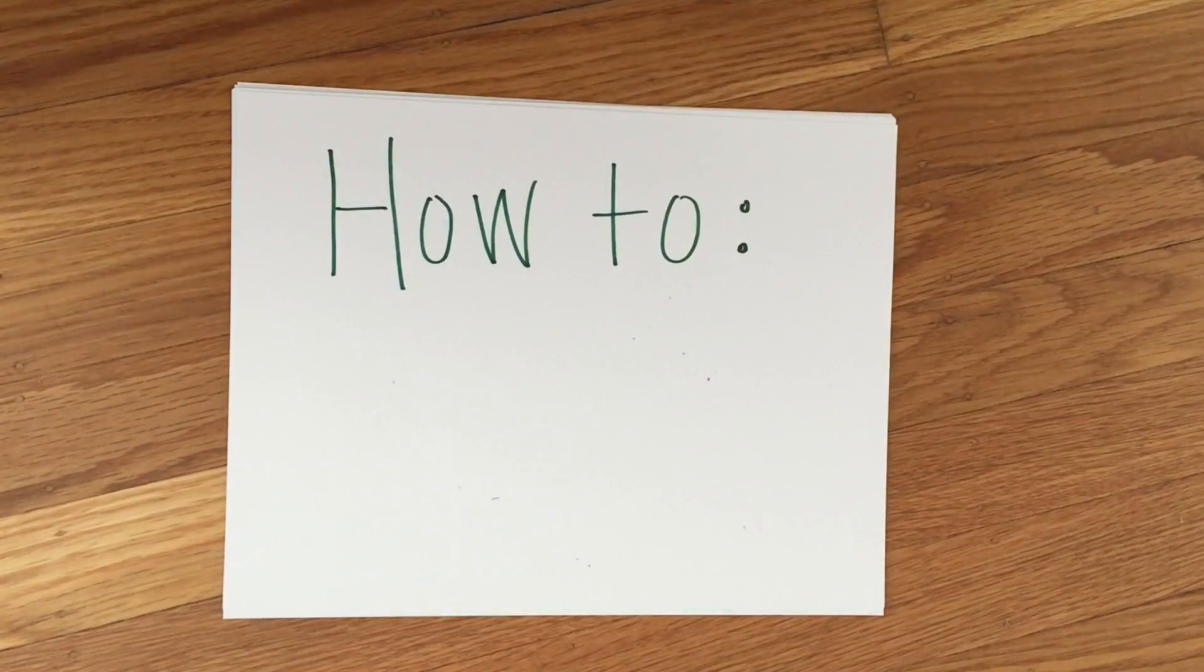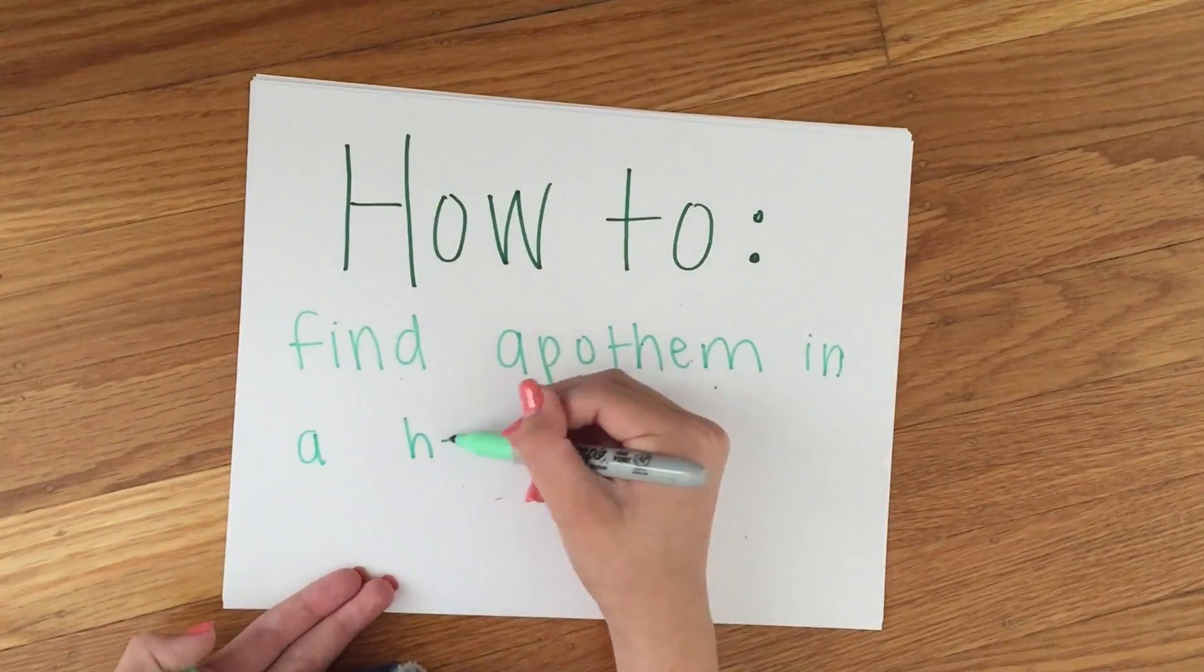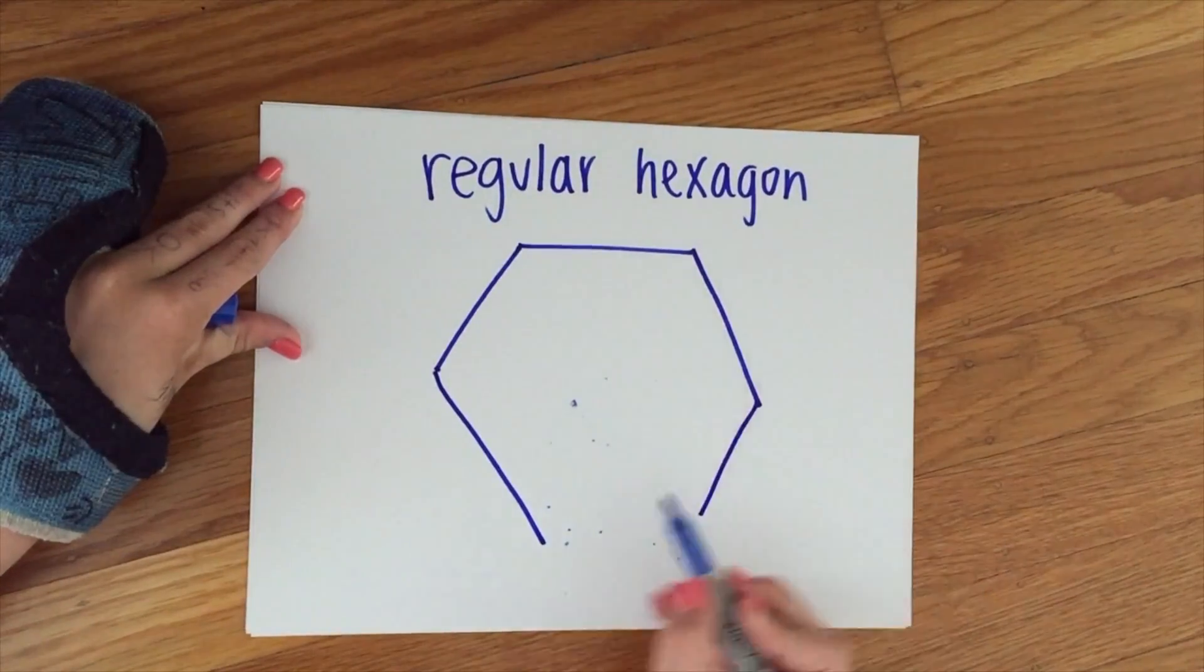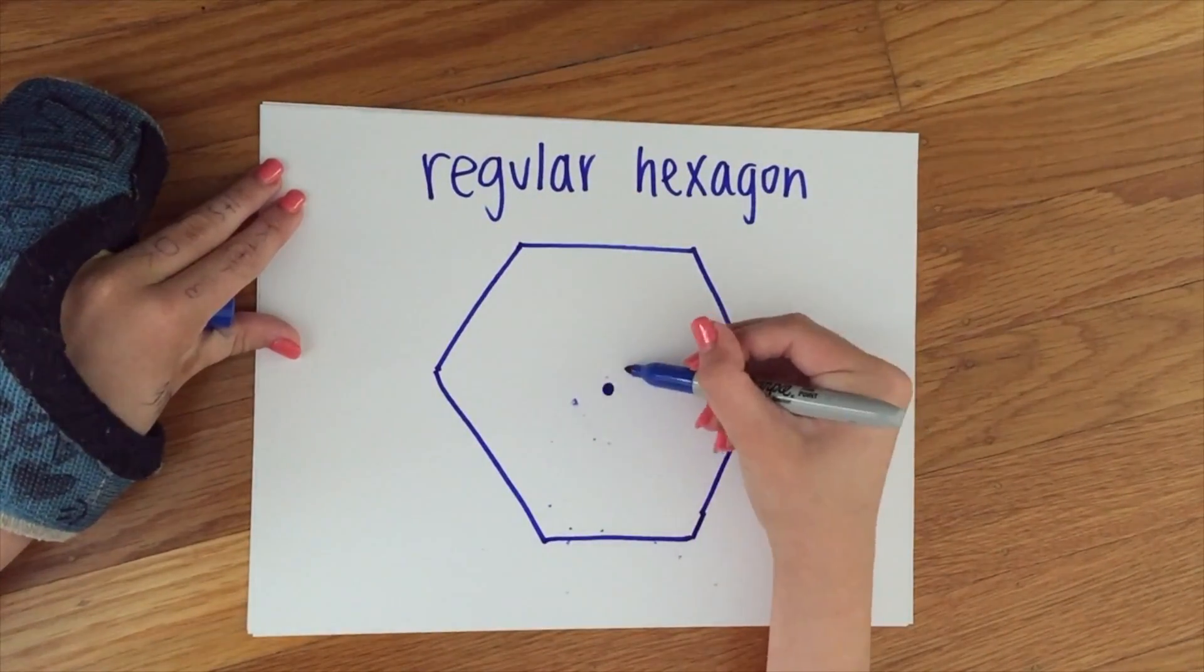Next we're going to talk about how to find an apothem in a hexagon using 30-60-90. Here is a regular hexagon. All sides are congruent.